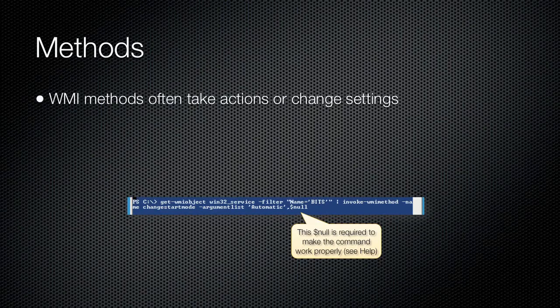Many WMI classes expose methods that cause the class to take some action. For the core classes in the root\cimv2 namespace, these methods, when available, are often your only means of making configuration changes. Many methods accept one or more arguments, or parameters, which customize a method's behavior. For example, a reconfiguration method might accept arguments that specify the new configuration settings.